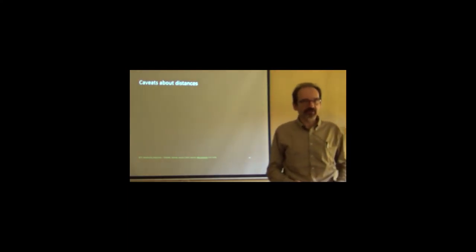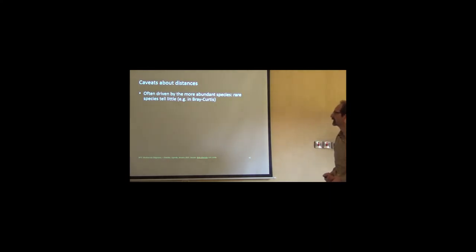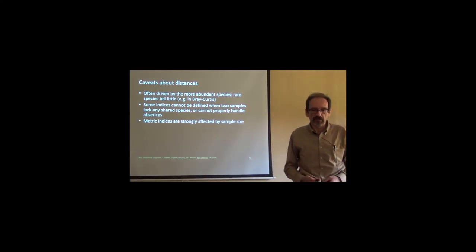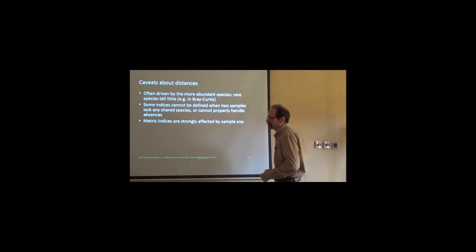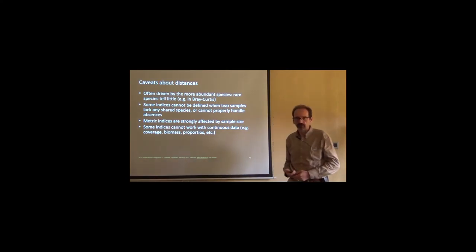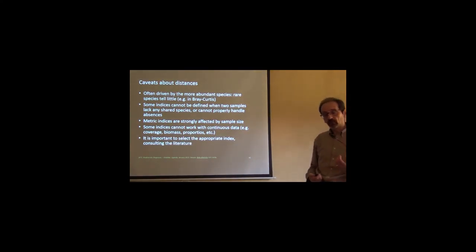A number of caveats, caveat emptor, as Tan said before. They are often driven by the more abundant species, and rare species will tell you little. That's a common problem in the Bray-Curtis index. Some indices cannot be defined when two samples lack any shared species. Or cannot properly handle absences, because they give undefined results. It's basically a divide by zero, and then you're lost. Metric indexes are strongly affected by sample size. The bigger the sample size, the bigger the distances. And some indexes cannot work with continuous data, as I showed you in the case of Morisita. So it's extremely important, if you are working with this, first look at noise, then consult the literature. There is abundant literature on this, and you'd better advise not to make that decision alone. Look at what people have to say, and especially look at what failures are available in literature by using the wrong index. Although it's very difficult that somebody who has failed using an index will be published.